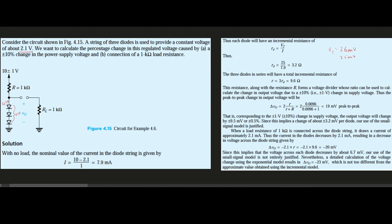The reason it's 9.6 ohms is that RD = 3.2 ohms is for one diode. Since we have three in series, we multiply by 3, giving a total resistance of 9.6 ohms across the diode string. This resistance, along with the series resistor R of 1 kilohm at the top, forms a voltage divider.